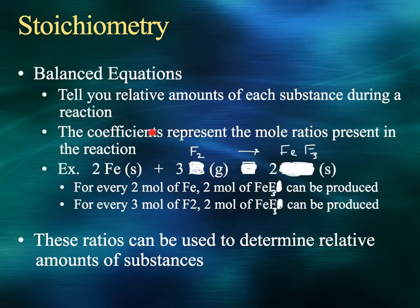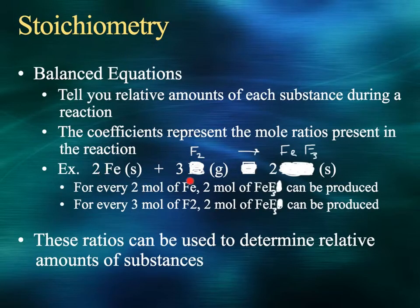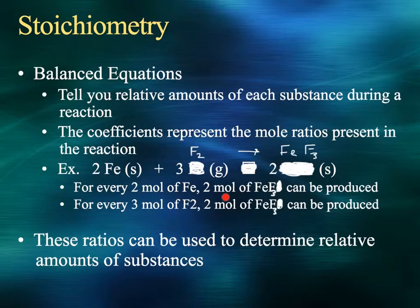Those coefficients represent the mole ratios present during the reaction. For example, the two out front in front of the iron means that you're going to need three molecules of fluorine gas in order for this reaction to occur. As it says below, for every two moles of iron, two moles of FeF3 can be produced.